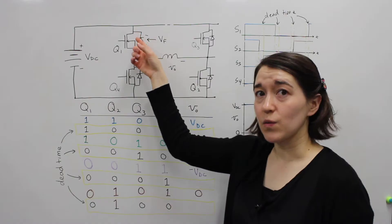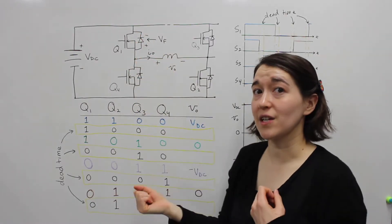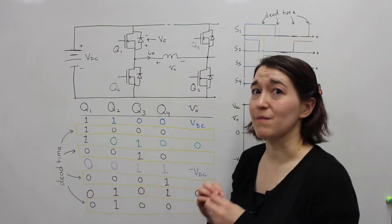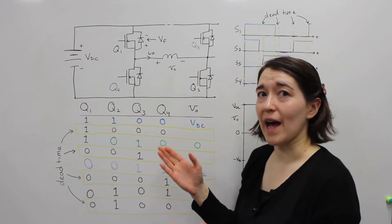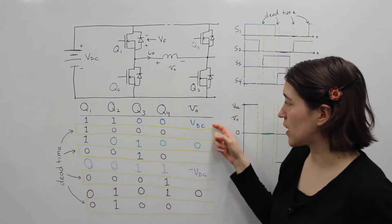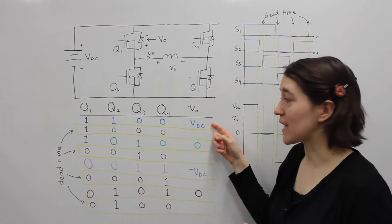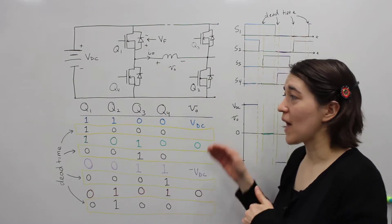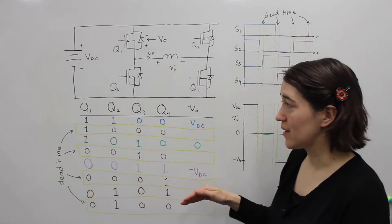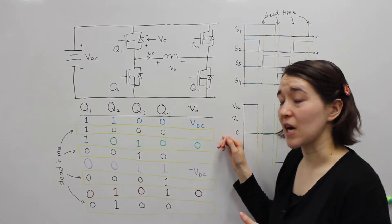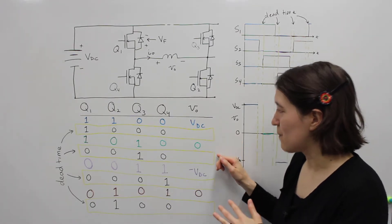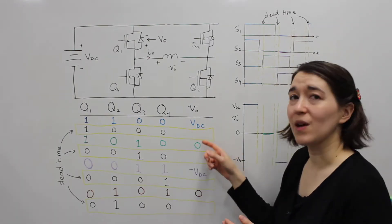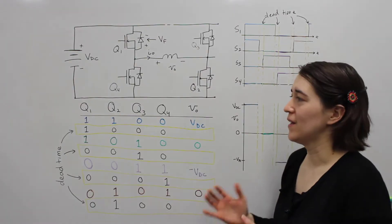Remember that we have to switch these switches in a complementary fashion, but because switches take time to turn on and off we need to add some dead time. Before we looked at four different switching states, redrawn here. The first switching state gives VDC at the output, zero, negative VDC, and then zero. As you transition between each of those you're going to need some dead time, and we're going to go through each of those and explain what we would see at the output during the dead time.